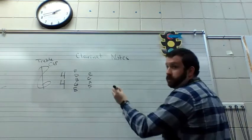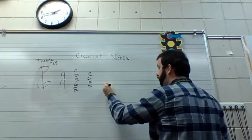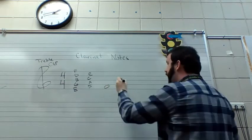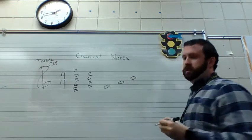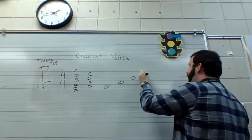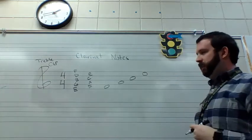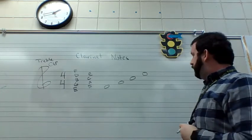Notice that we always start from the bottom and work our way up to the top. F is the first space, A is the second space, C is the third space, and E is the fourth space.